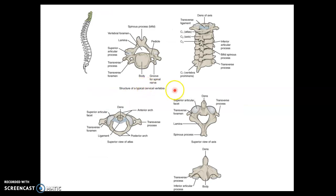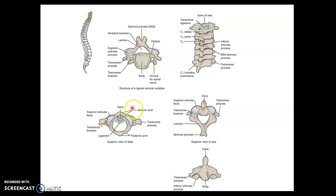What we mean by a bifid spinous process is that here's a spinous process — notice how it splits in two. That happens often in cervical vertebrae, but nowhere else in the spine. Another key indication of a cervical vertebra is that the transverse processes have foramina, as you can see here and here. All seven cervical vertebrae from C1 to C7 have transverse foramina; no other vertebrae in the spine have that.